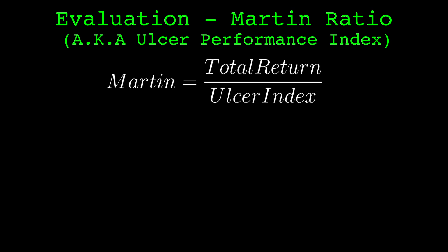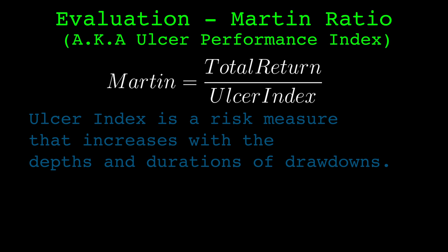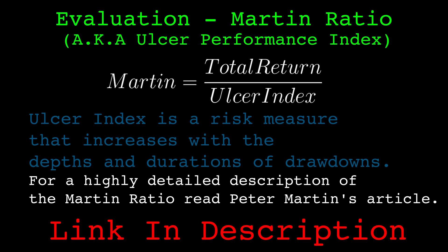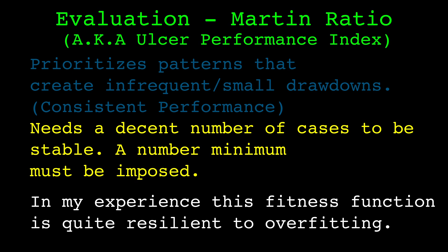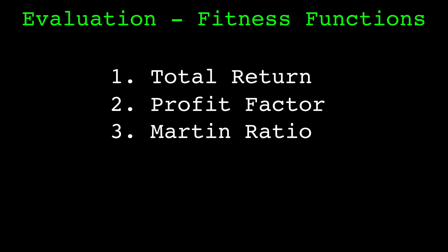Our final fitness function is the Martin ratio, which is sometimes called the ulcer performance index. It is calculated by dividing the total return by the ulcer index. The ulcer index is calculated by summing the squared drawdown at each candle in the dataset, causing the fitness function to be punished by both the length and depth of drawdowns. The developer of the Martin ratio and ulcer index has an excellent article describing its properties and implementation, linked in the description. Patterns that have smaller drawdowns and recover quickly will be prioritized. Like the profit factor, I require a minimum number of occurrences, but this comes into play much less often for the Martin ratio. Overall, I've found patterns that maximize this fitness function tend to perform the best out of sample — I believe this to be the best fitness function presented, although the profit factor and potentially total return have a time and place. The fitness function selected will drastically alter the patterns the genetic algorithm finds.